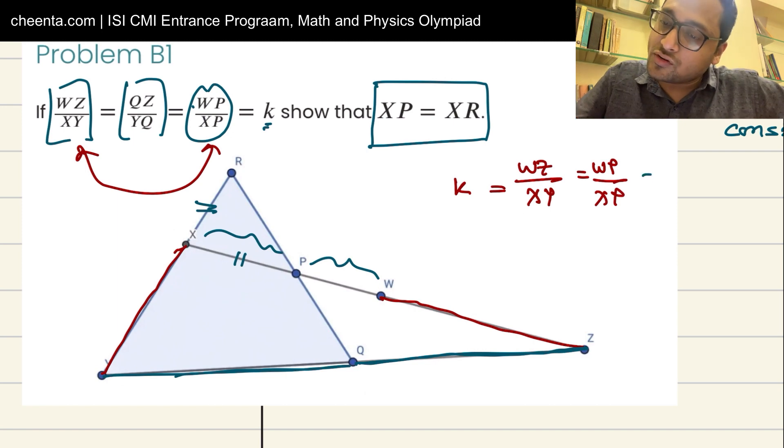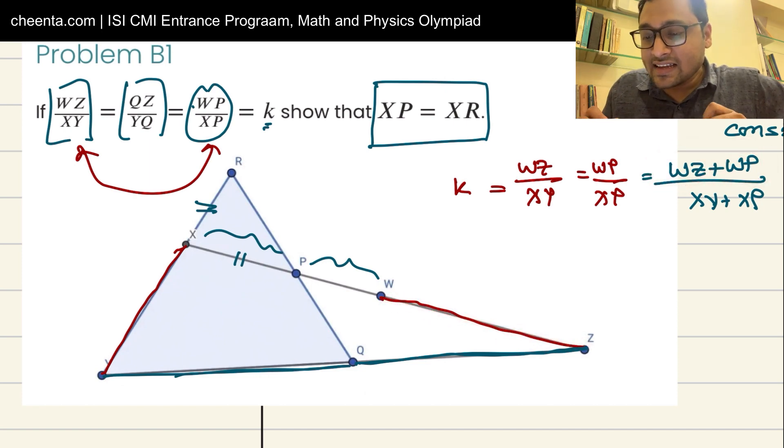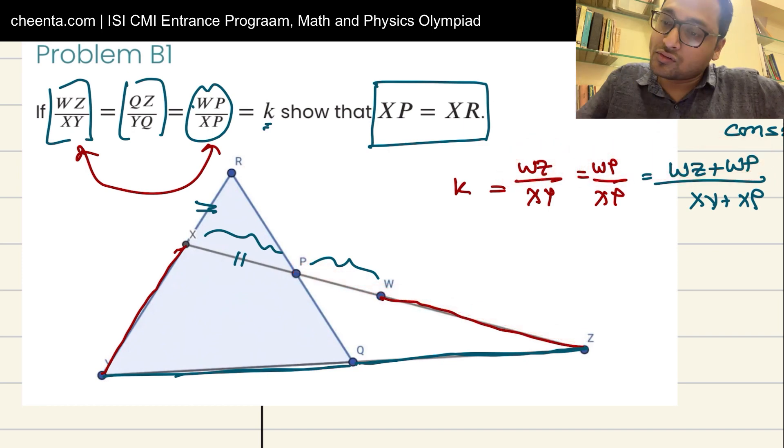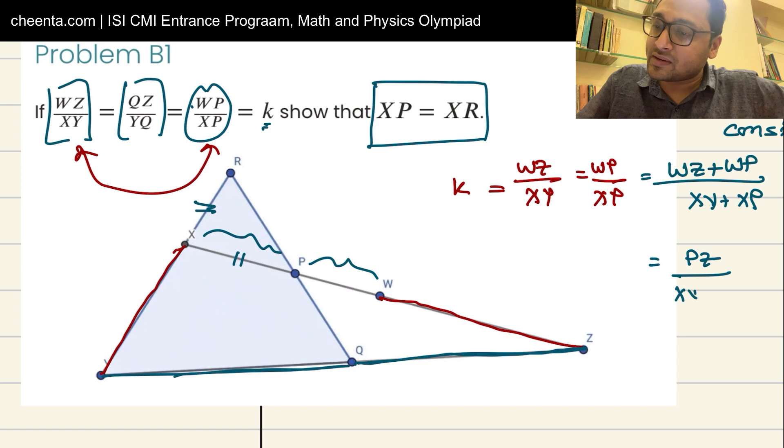So it's given that WZ over XY is equal to WP by XP, and that's equal to k. So if I use addendo I have WZ plus WP divided by XY plus XP. WZ plus WP, the reason I am doing it is because I am getting this entire segment PZ on the top if I add these two. So this is PZ, and the denominator is XY plus XP.